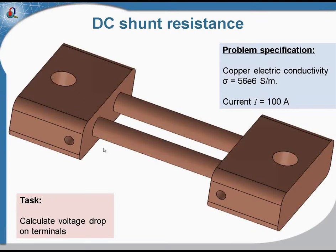The voltage drop across the shunt terminals is proportional to the current flowing through the shunt. Since the resistance of the shunt is known, the voltmeter connected to these terminals can be scaled to directly display the current value. The large holes are used to connect the bus bar, and the small holes are used to connect the voltmeter.